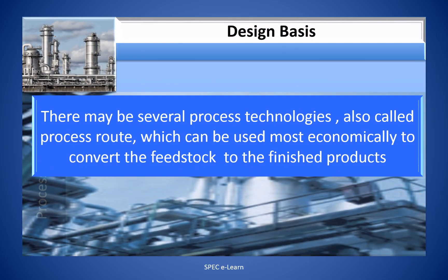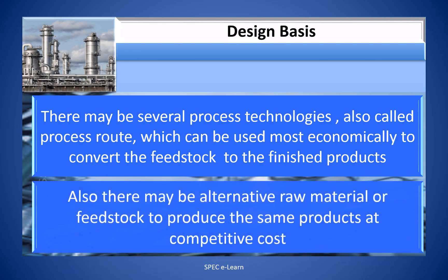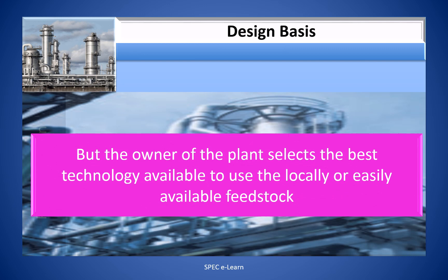There may be several process technologies, also called process routes, which can be used most economically to convert the feedstock to the finished products. Also, there may be alternative raw materials or feedstock to produce the same product at competitive cost. The owner of the plant selects the best technology available to use a locally or easily available feedstock.